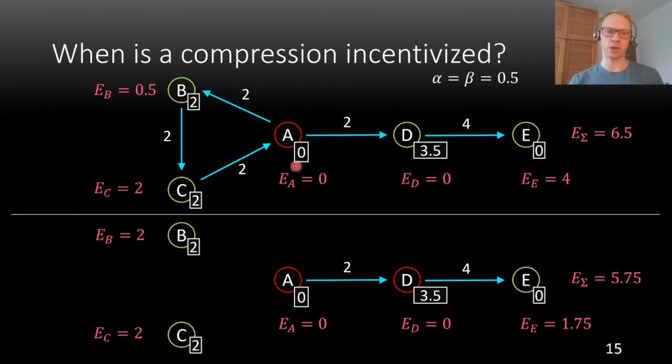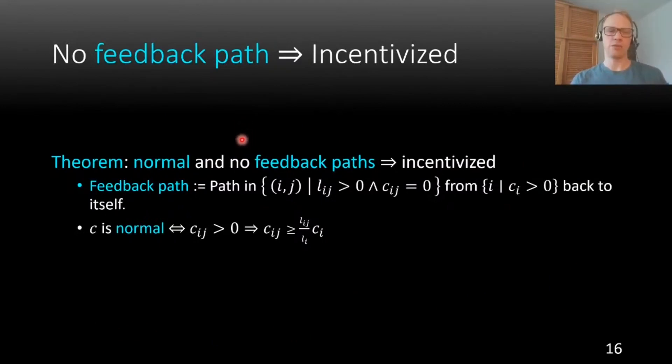So here incentives to compress are misaligned with social welfare. The reason why this happens is that if we look at this kind of tail here where most of the welfare is lost, there is no path of liabilities that goes back to any of the banks in the cycle here. So the banks in the cycle in a sense only need to care about themselves and not about other banks. And it will actually turn out that whenever a financial system has a structure like that, then compression is always incentivized. We have a theorem on that. It reads as follows: If a financial system is normal and there are no feedback paths, then compression is incentivized. Now, being normal is a technical condition that's required when we do compression with several cycles at the same time. If we only do compression with a single cycle, it's always satisfied. So I'm not going to go into detail here.